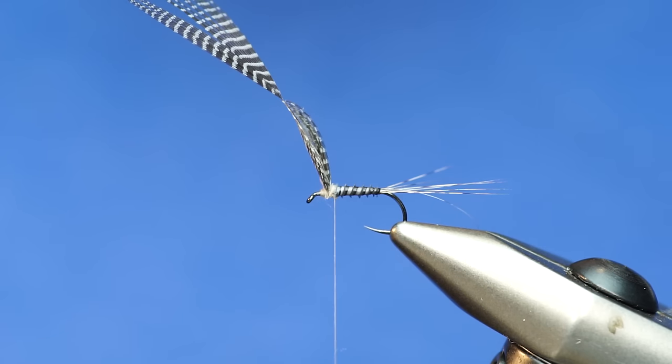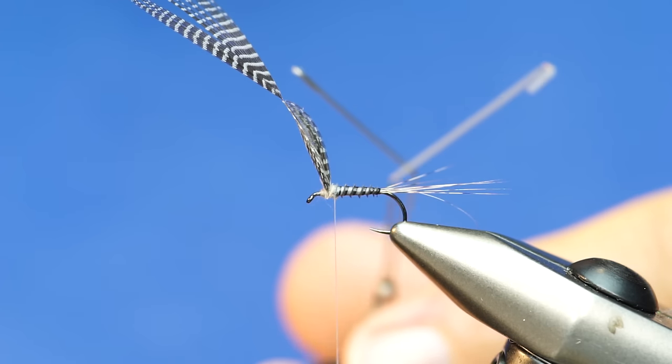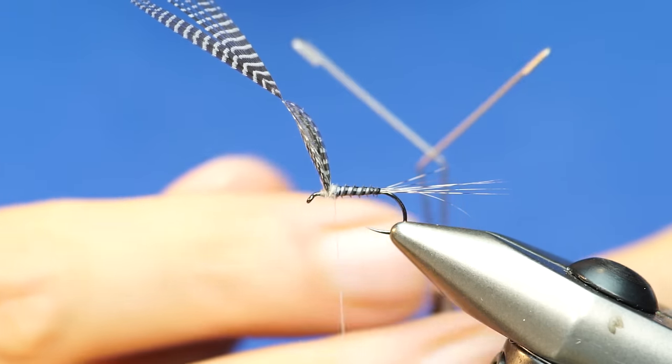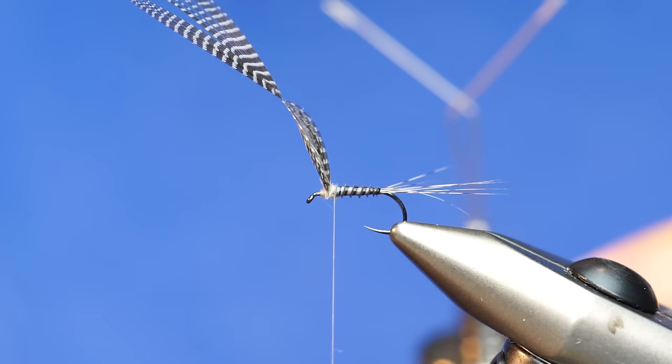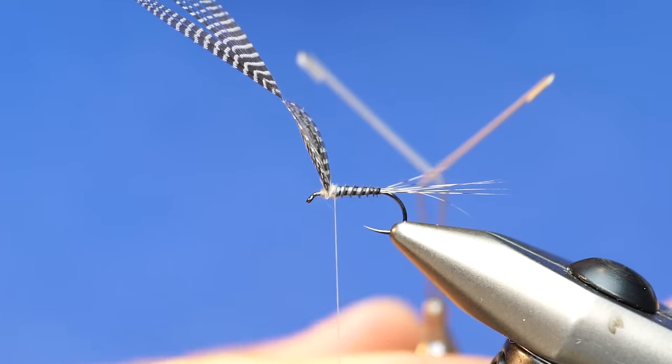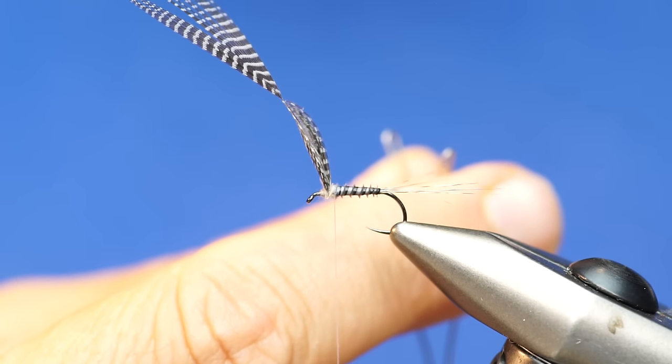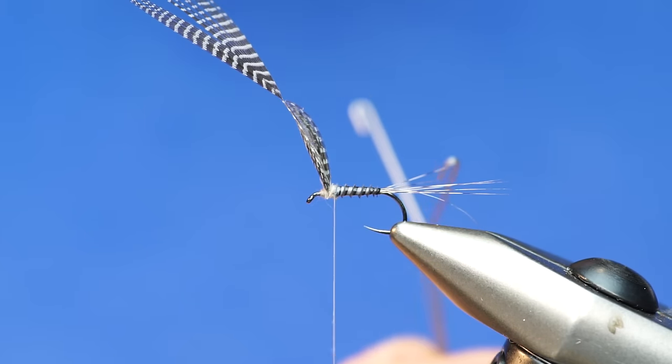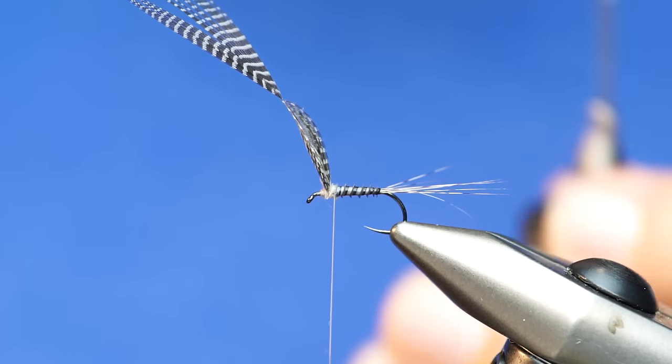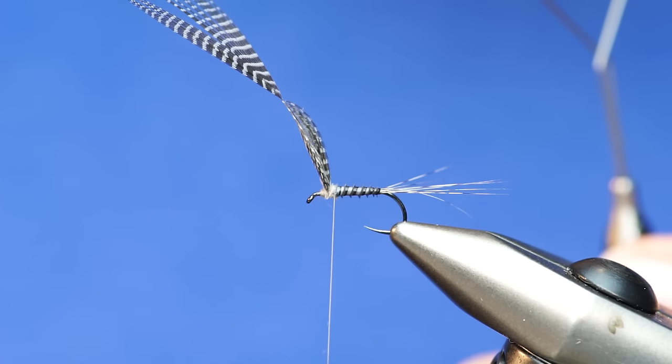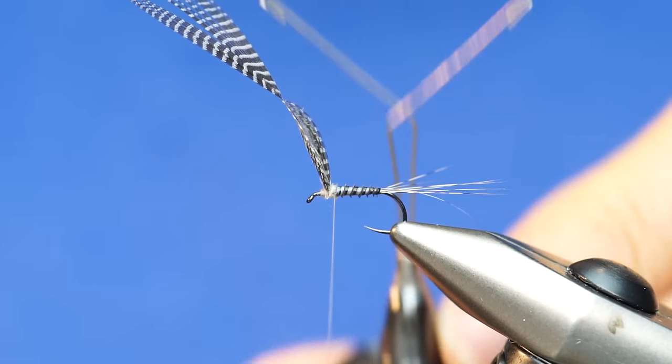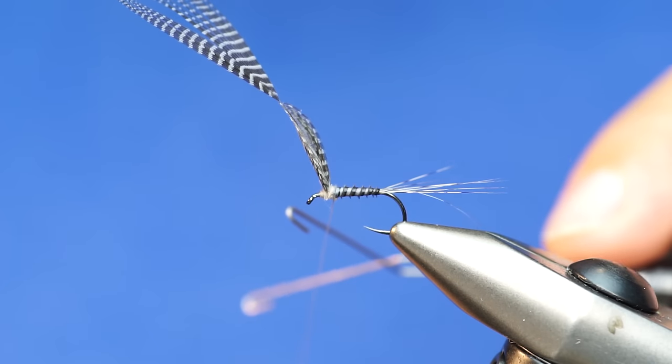Now I'll just set that there and I'm going to grab my Stonfo Elite Roto-Dubbing Twister. I use this one over the shepherd hook style because this one is nice because when you pull down on it, it will put tension in that loop that we're going to create here in a second. That's important with the CDC and with using the clip.